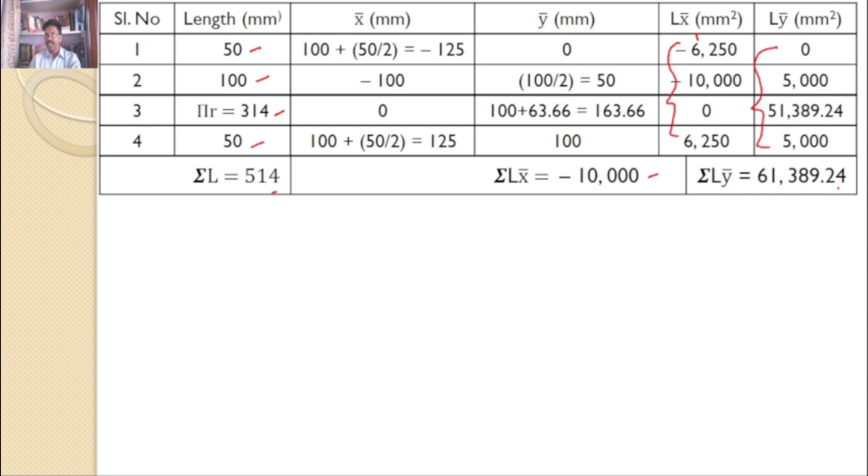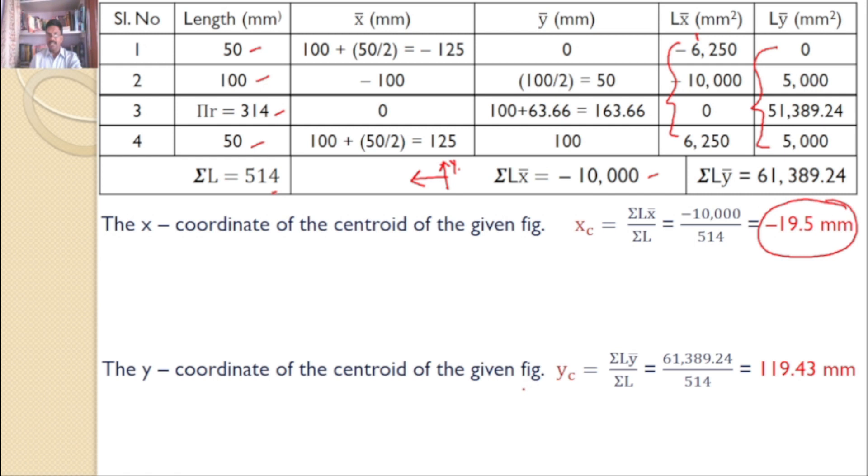Now I can calculate the x-coordinate of the centroid for the given figure: ΣLx-bar divided by ΣL, which is -19.5 mm. The minus indicates the centroid is towards the left side of the y-axis. The y-coordinate of the centroid, Yc, equals ΣLy-bar divided by ΣL, which is 119.43 mm. These are the answers for the given figure.